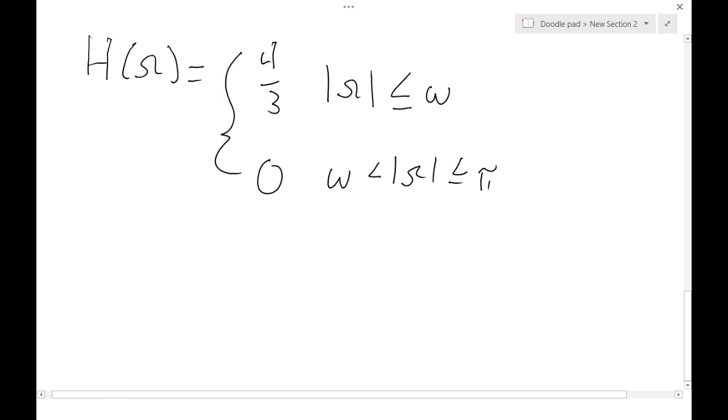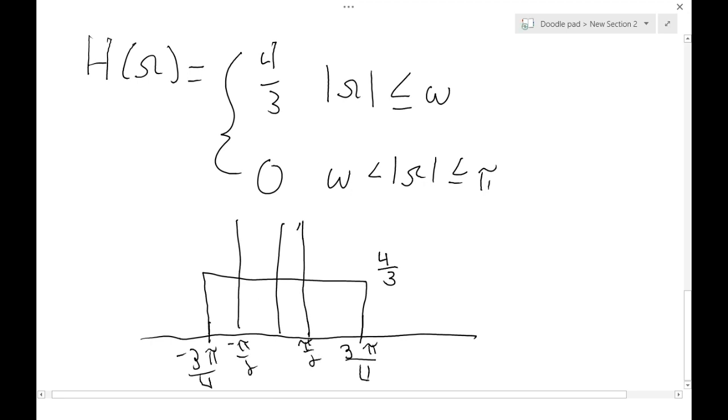So when we look at the transfer of this in the DTFT, we get essentially a rec function going from 3 pi divided by 4 to negative 3 pi divided by 4 with the height of 4 divided by 3. We're going to use this idea after we interpose the x of omega onto this graph.